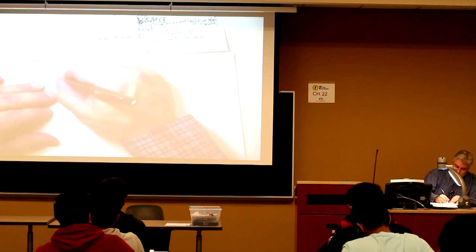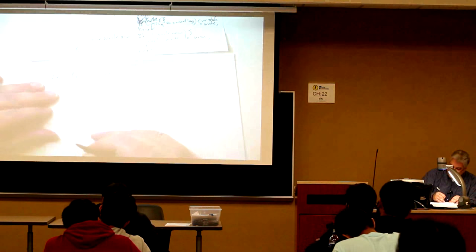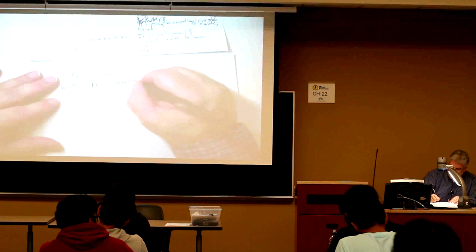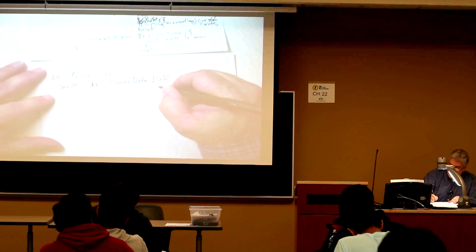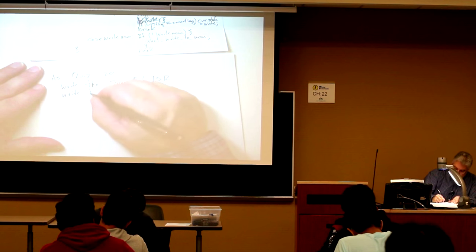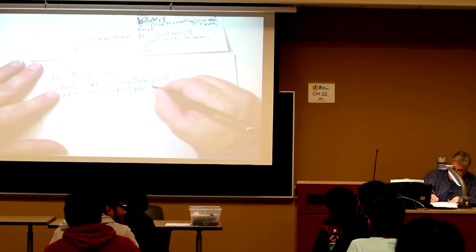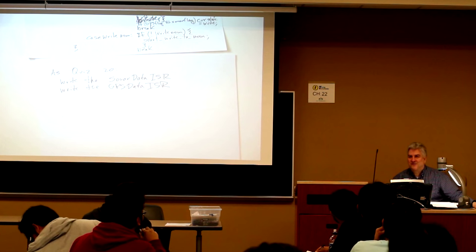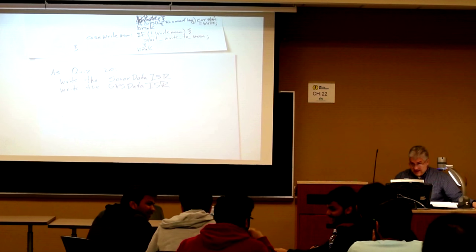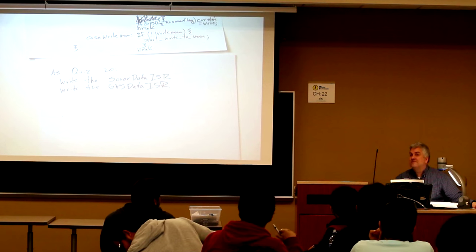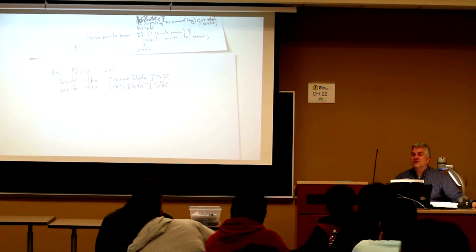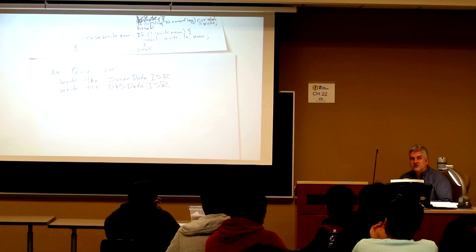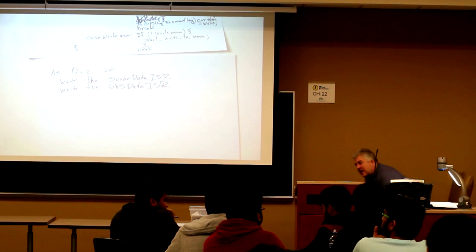As quiz 20, write the sonar data ISR and the GPS data ISR. You can work on this in groups of four. Keep in mind what has to be done in those ISRs: reading a character, storing a character, checking, and maybe setting a flag. Make sure it's on a clean sheet of paper and all your names are on it.